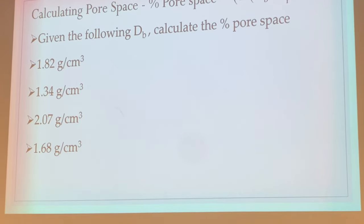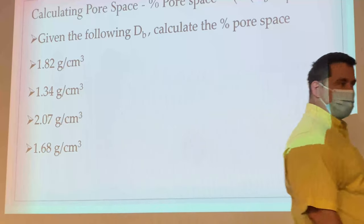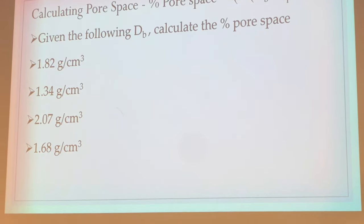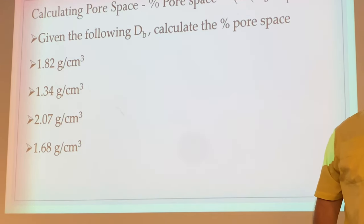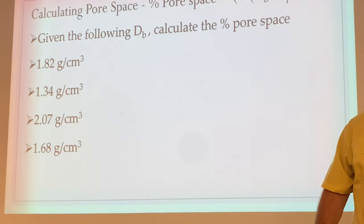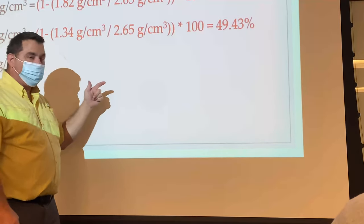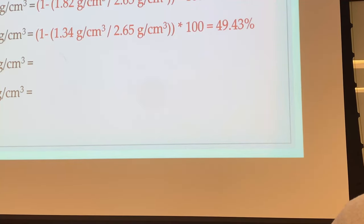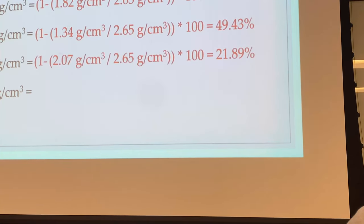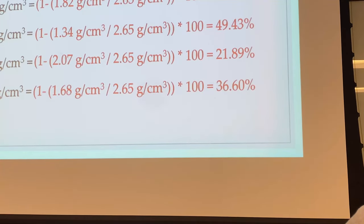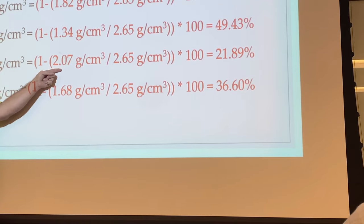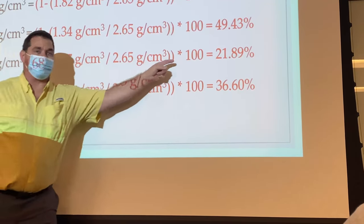Work problems one and two on your own. As bulk density increases, pore space decreases — one for one — because it's the mineral space taking up that volume. Looking at problem two with a bulk density of 21.8: this is the highest bulk density we've seen so far, so we would expect the least amount of pore space.